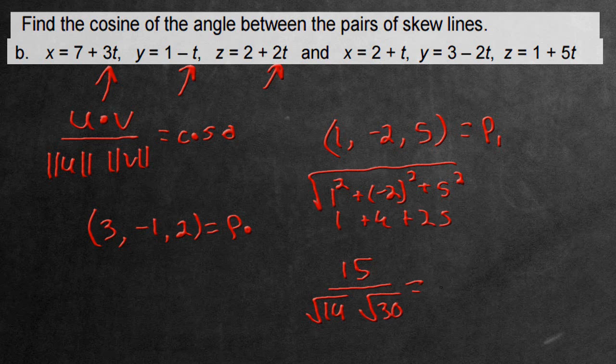And this will equal the cosine of theta, the angle between the two vectors that we found. So the parallel vectors that we found, when you use them to find the angle between those particular vectors, it's equivalent to the angle between the two skew lines you see here. And that is the end answer.